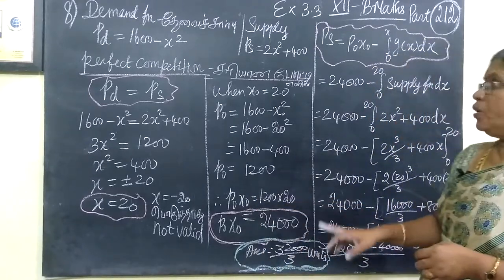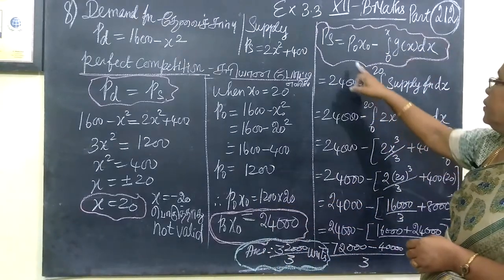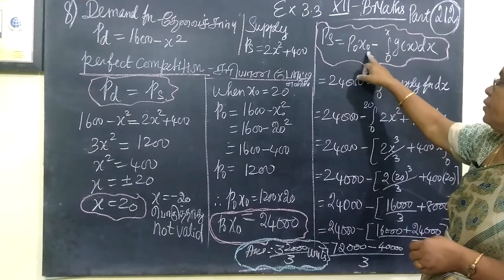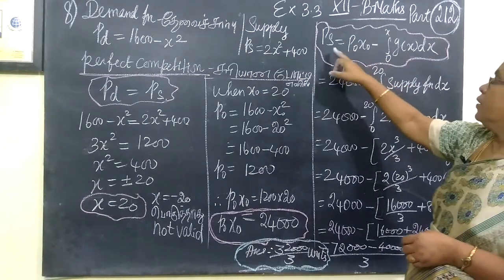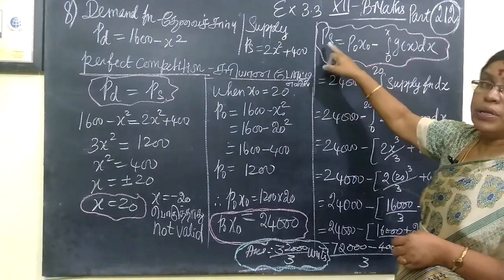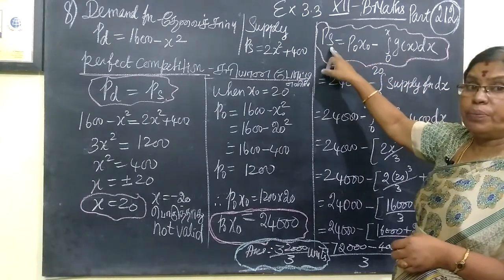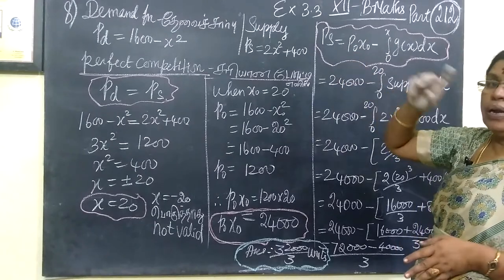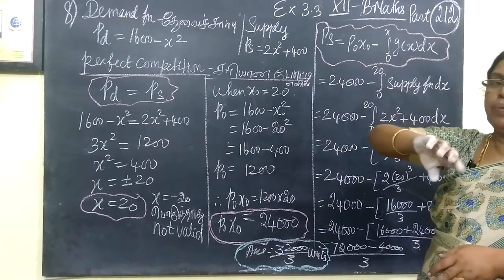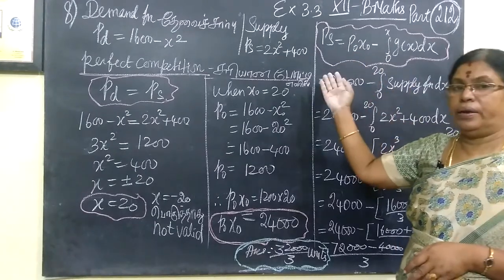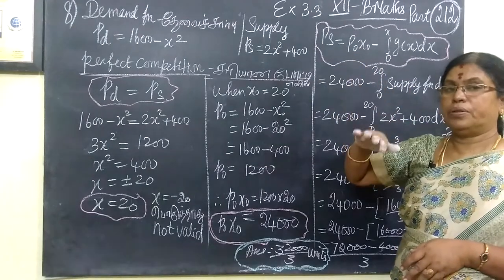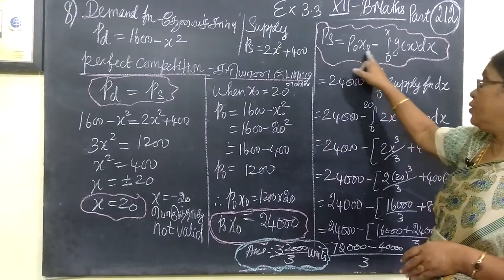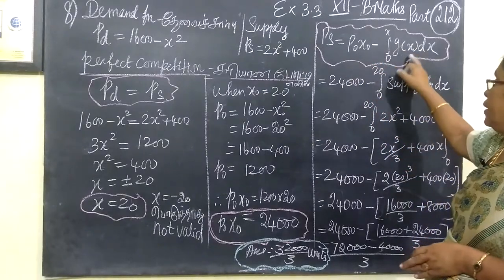Then after finding P0 and x0, you get P.S. — the producer surplus — at P0 and x0. Producers supply when x0 is determined. When x0 is found, consumer surplus is also computed. After finding P0 and x0, substitute into the surplus expression.